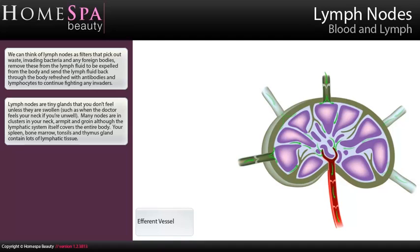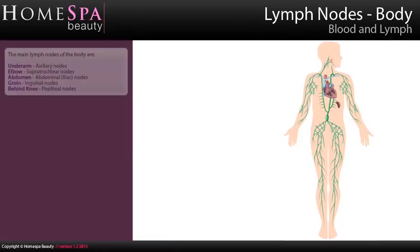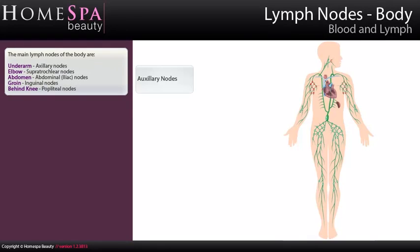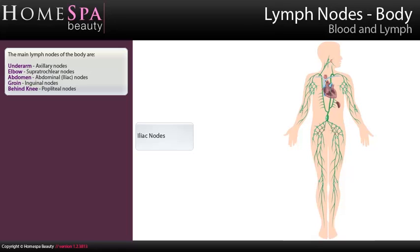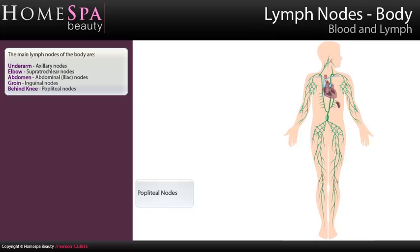Your spleen, bone marrow, tonsils and thymus gland contain lots of lymphatic tissue. The main lymph nodes of the body are: underarm — axillary nodes; elbow — supratrochlear nodes; abdomen — abdominal and iliac nodes; groin — inguinal nodes; and behind the knee — popliteal nodes.